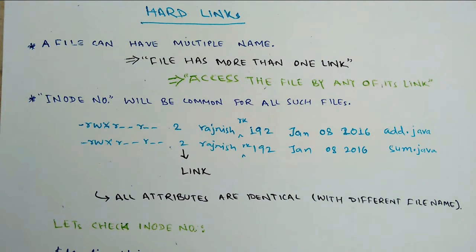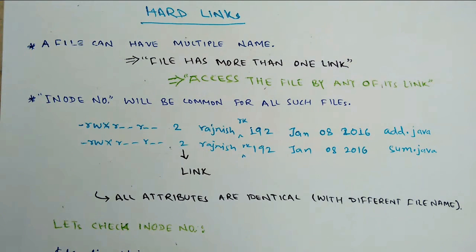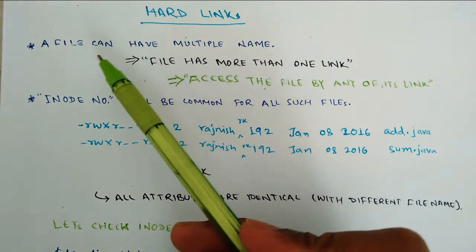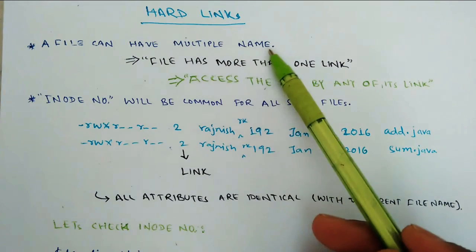First, hard link meaning is very important. Suppose we have a file and we want to create another file which contains the same contents of the previous file. It means that the first file we have created, we have made multiple copies. So that is the concept of hard link. A file can have multiple names.